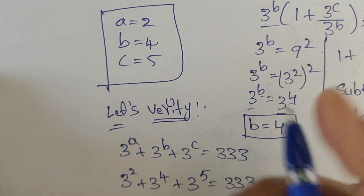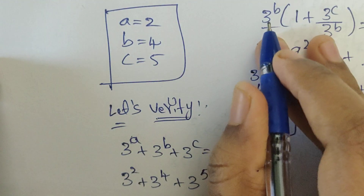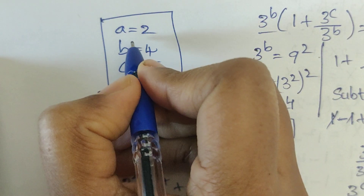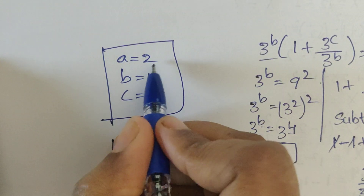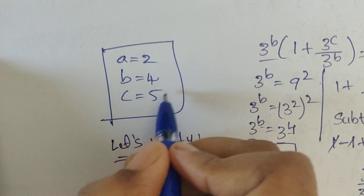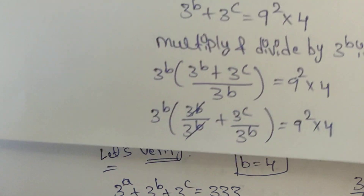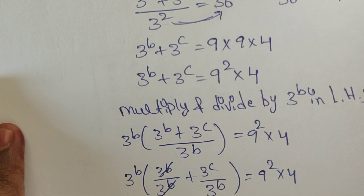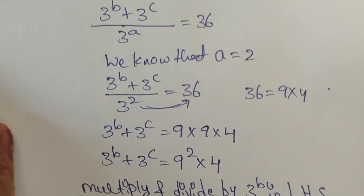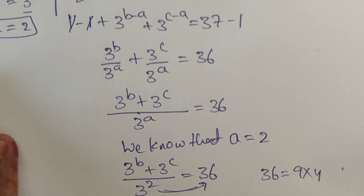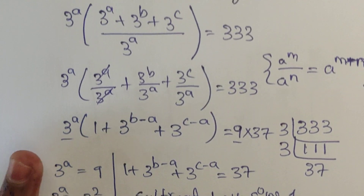So these are the solutions: a equal to 2, b equal to 4, c equal to 5. Thank you for watching, please do subscribe for more videos. Thank you and take care, bye bye, see you in the next video.